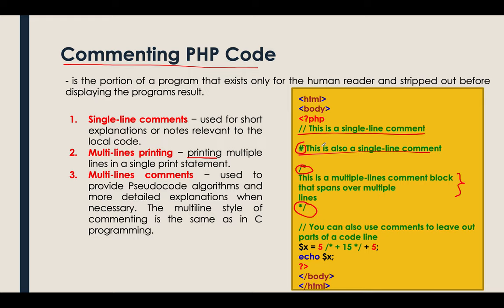Comments will not be displayed in the web page — you can only see them in the code itself. For example, we have variable x with a value of five plus five, but part of the expression is commented out using a multi-line comment block, so we are only adding five plus five, meaning the output for variable x is 10.